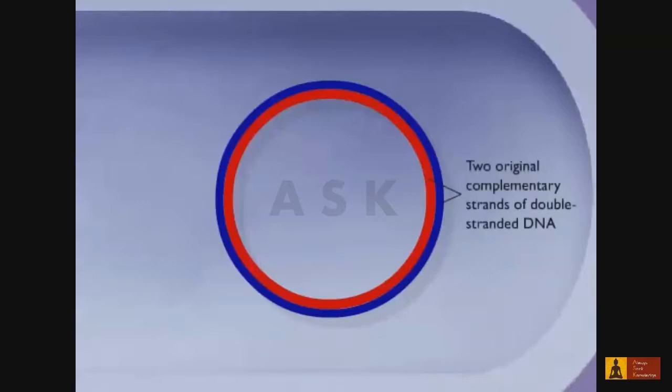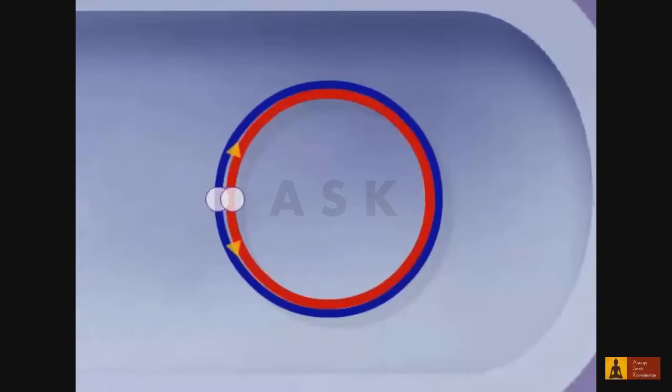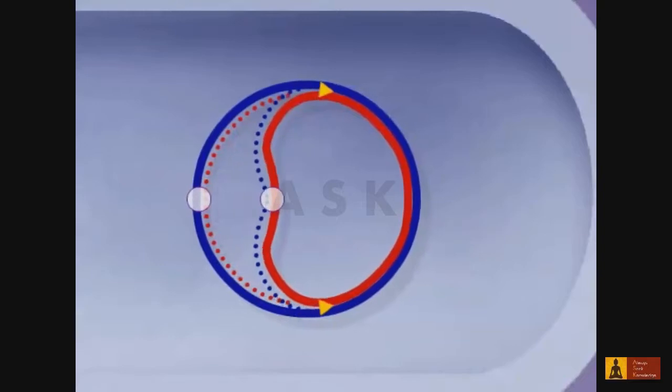The genetic information in a bacterial cell is stored in the form of a double-stranded covalently closed circle of DNA. Replication begins at a specific site called the origin. The origin replicates and then DNA replication proceeds in two directions.